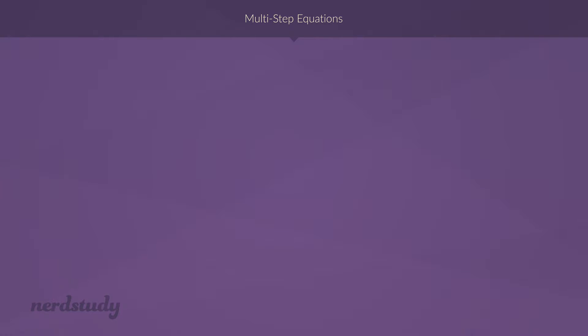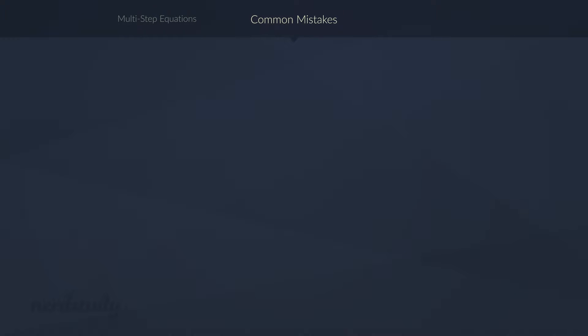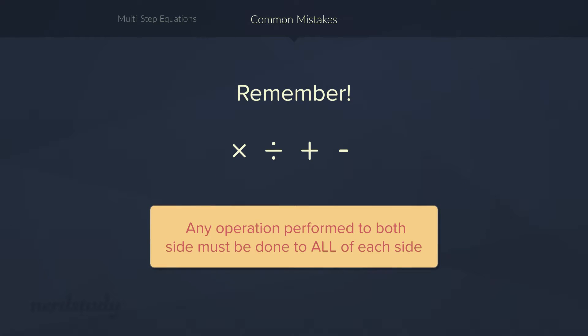Now beware of some of the common mistakes that students make when it comes to solving equations. One key thing to remember is that any operation that you perform onto both sides of the equation must be done to all of one side and all of the other side. Well, that sounds kind of hard to understand. So let's try an example together.